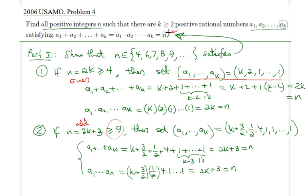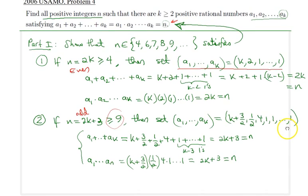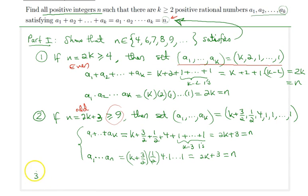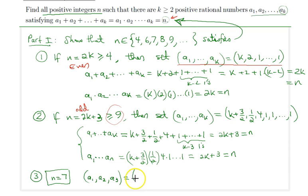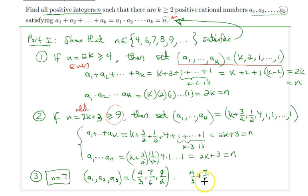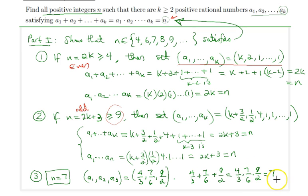There is one special case: n = 7, an odd number less than 9. For n = 7, we find a direct construction: three rational numbers 4/3, 7/6, and 9/2 do the trick. You can check that 4/3 + 7/6 + 9/2 equals 4/3 × 7/6 × 9/2, and the whole thing equals 7 = n due to cancellations. This completes Part 1 of our proof.